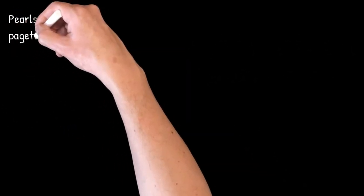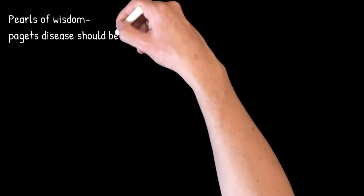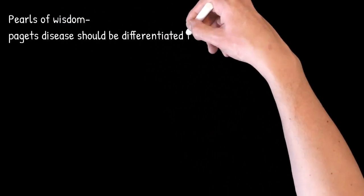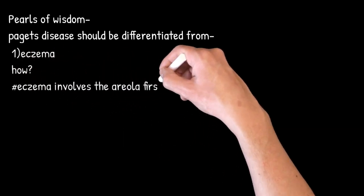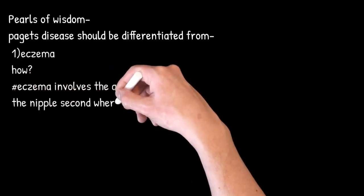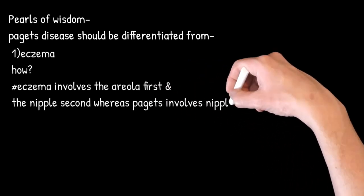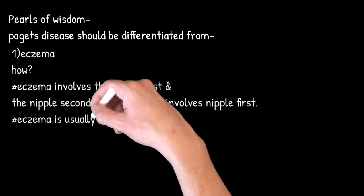Now, various pearls of wisdom. Paget's disease should be differentiated from eczema. How are you going to differentiate? Eczema involves the areola first and the nipple second. In Paget's disease, it involves the nipple first and then areola.